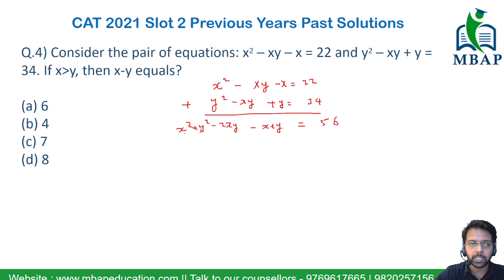Now x² - 2xy + y² will be nothing but (x - y)² minus (x + y). If you solve this equation you'll understand this is (x - y)(x - y - 1) = 56.